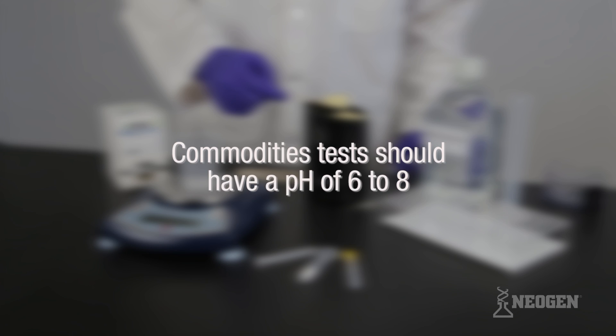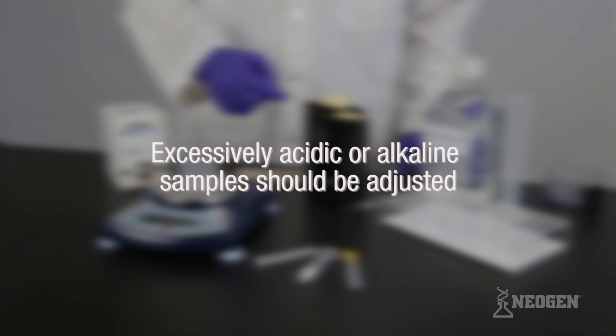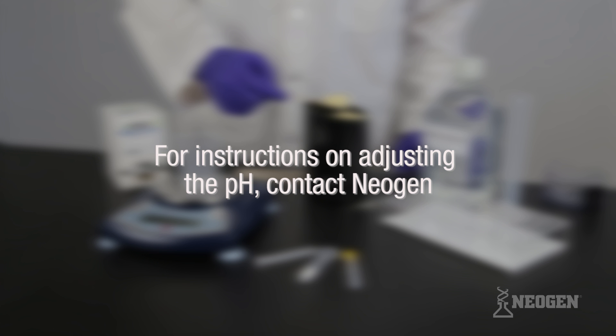Commodities tested should have a pH of 6 to 8. Excessively acidic or alkaline samples should be adjusted. For instructions on adjusting the pH, please contact your Neogen representative.